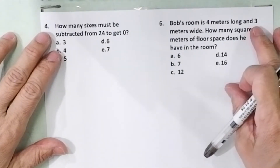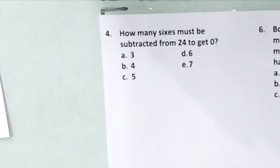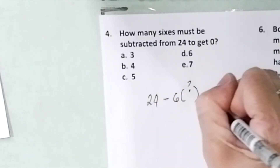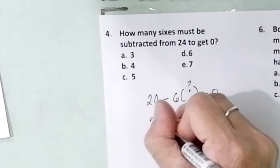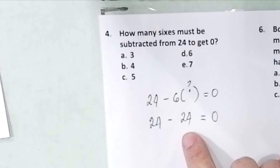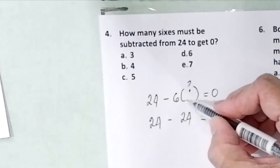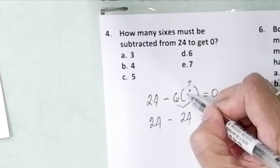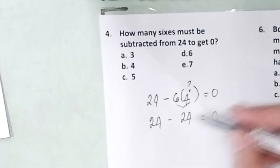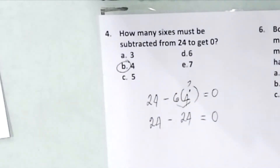Problem number 4. How many 6s must be subtracted from 24 to get 0? You will get 0 if you subtract 24 from 24. So ask yourself: what will I multiply by 6 to get 24? It is 4. Because 6 times 4 is 24, and 24 minus 24 is 0. So how many 6s must be subtracted from 24? You have four 6s. The answer is letter B.